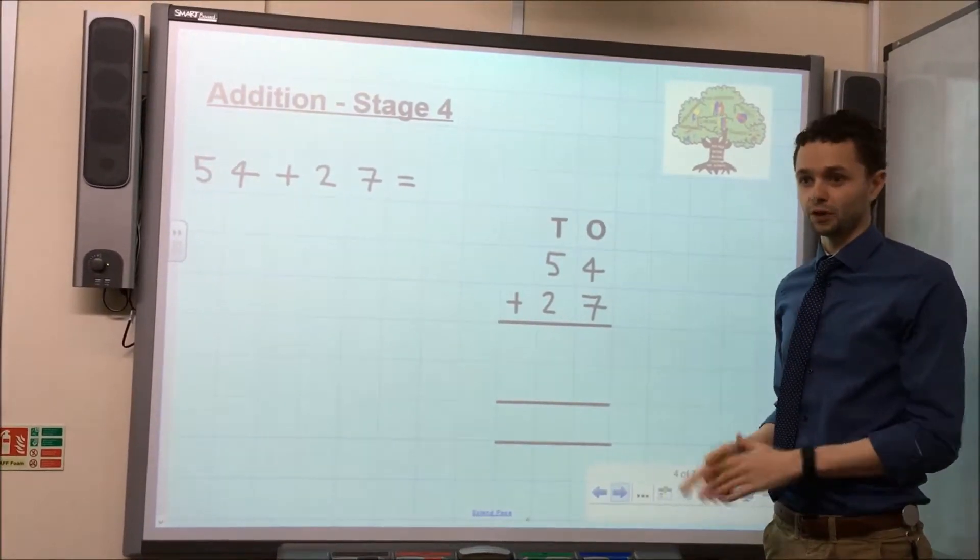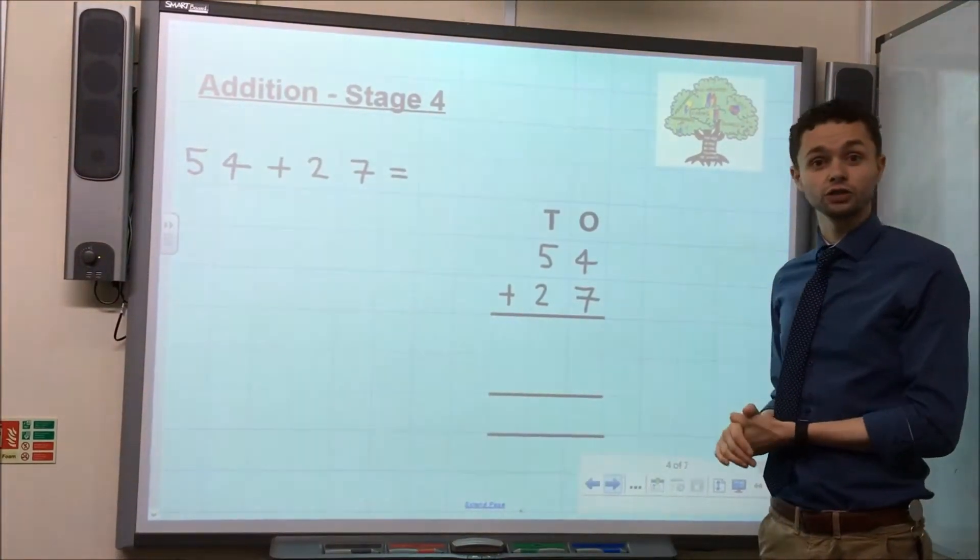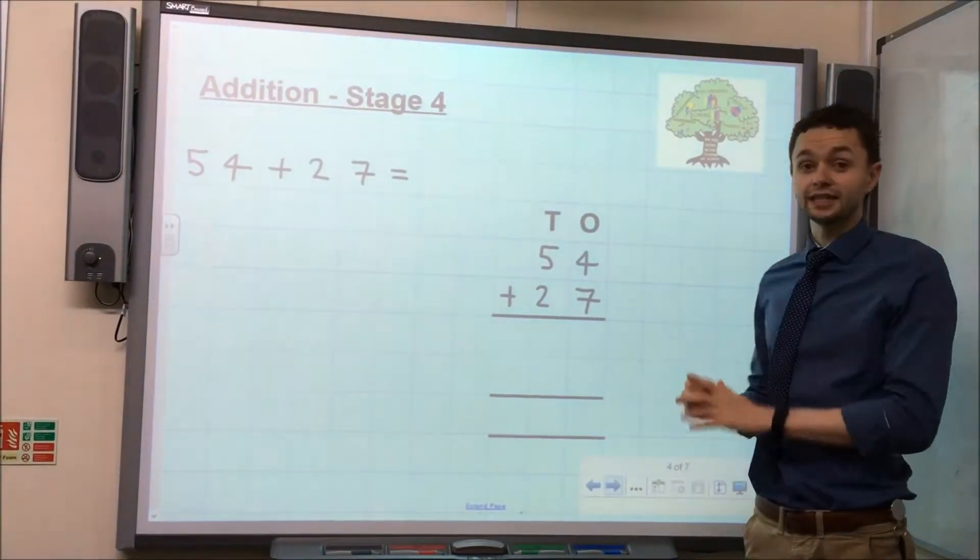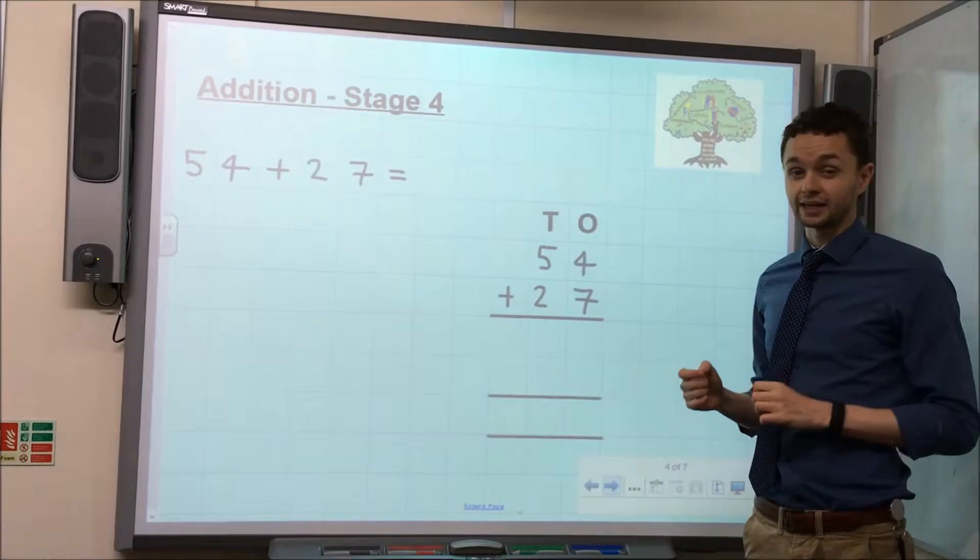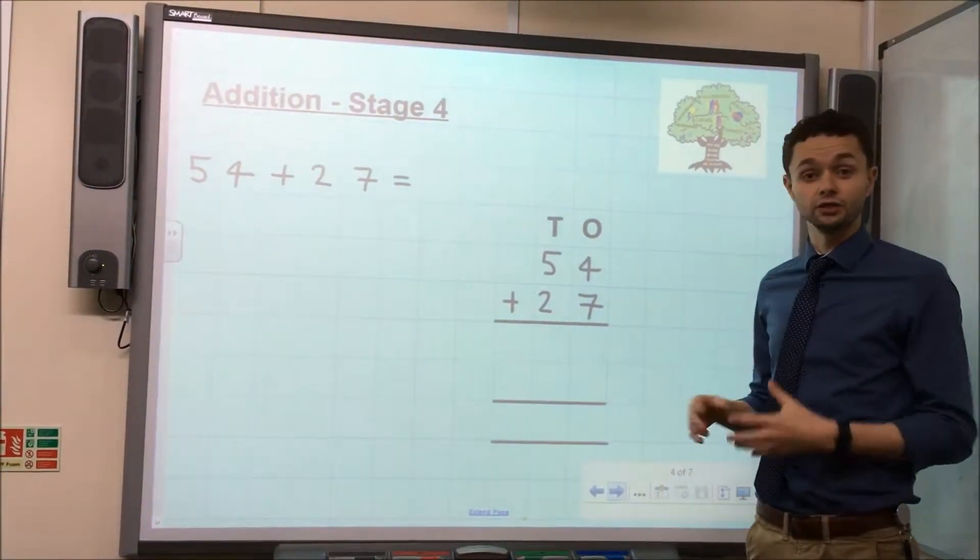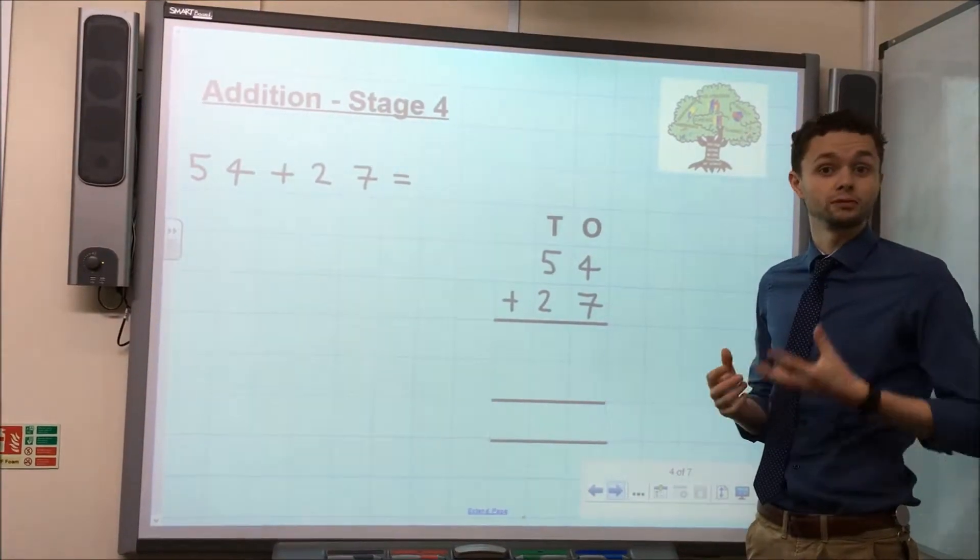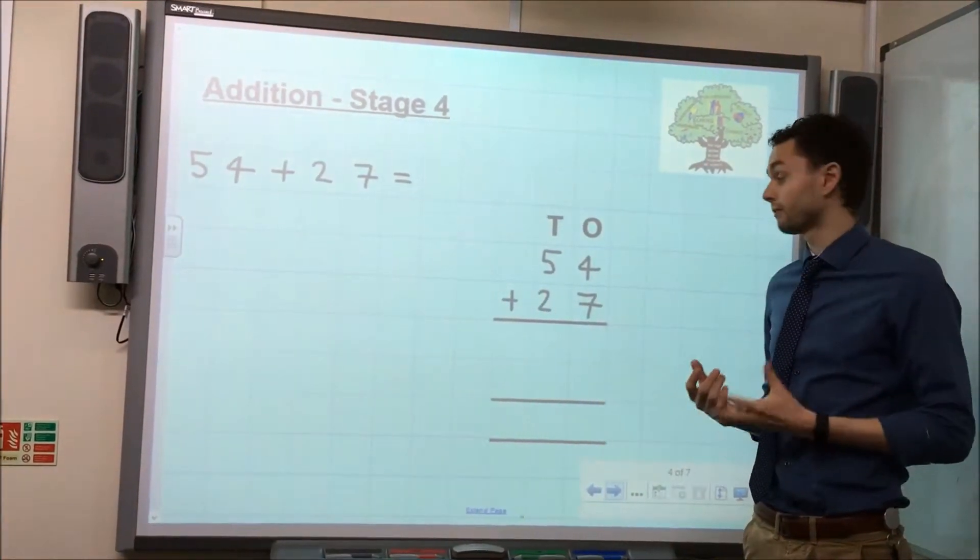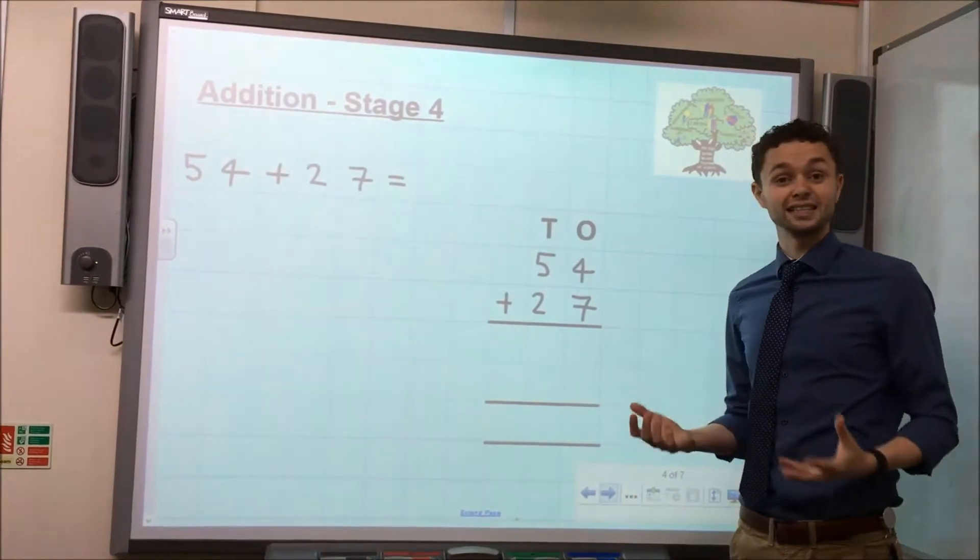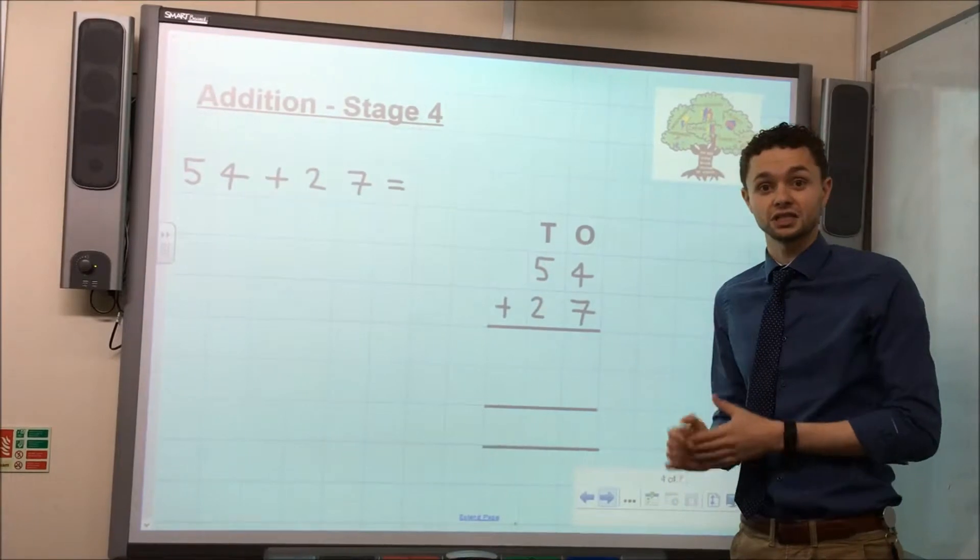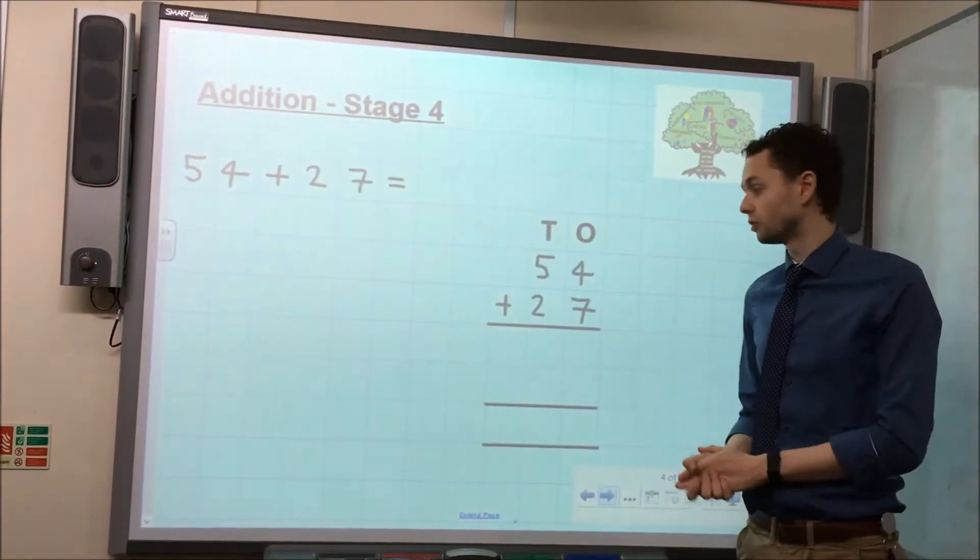Now, solving the calculation. The first stage is for the children to add the ones, seven ones and four ones. And this is actually a really important distinction to make. Even when I was at school, the ones were referred to as units, and this is quite a recent change in terms of the vocabulary. They are no longer referred to as units, they need to be referred to as ones. And in reality, that does make sense, because the numbers are ones, so it's easy for children to understand ones rather than units.